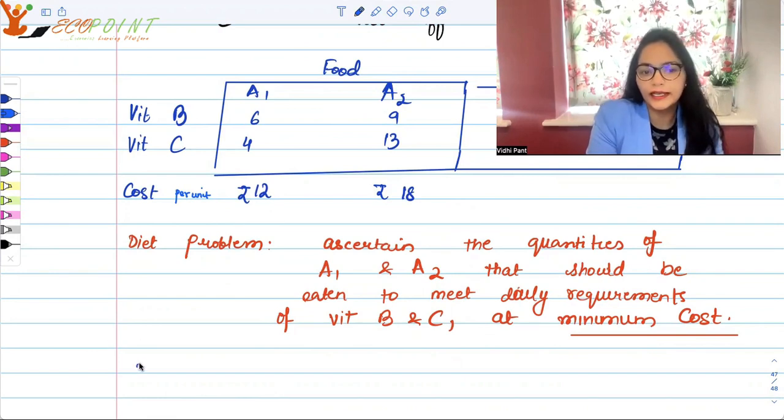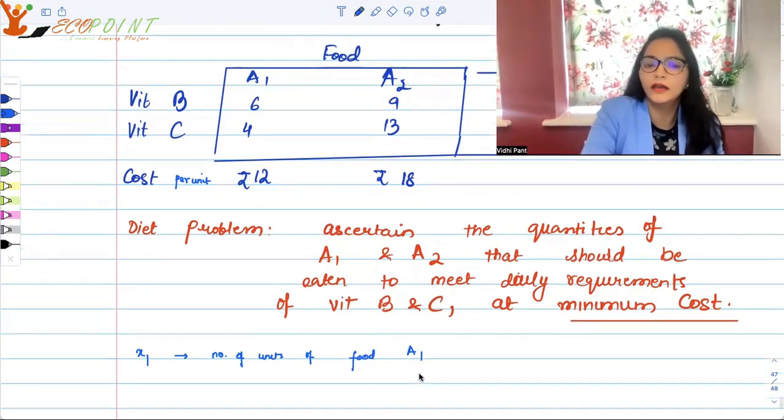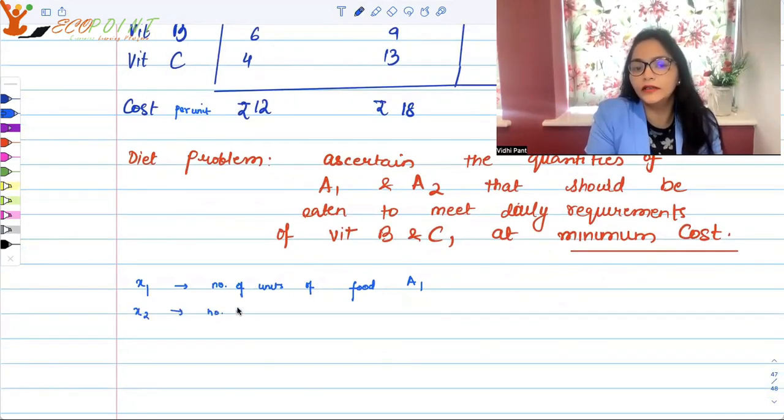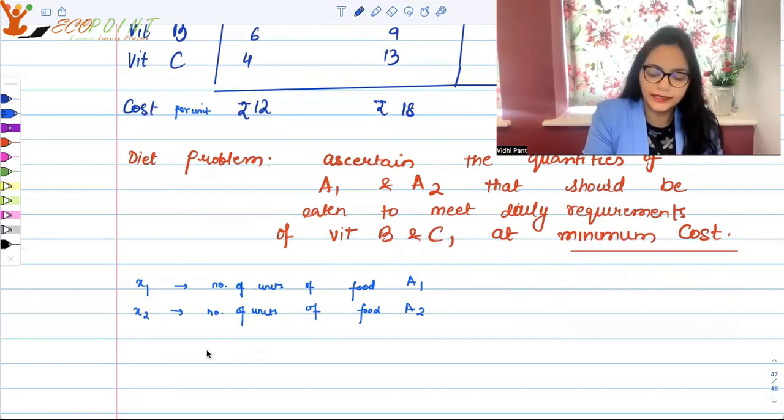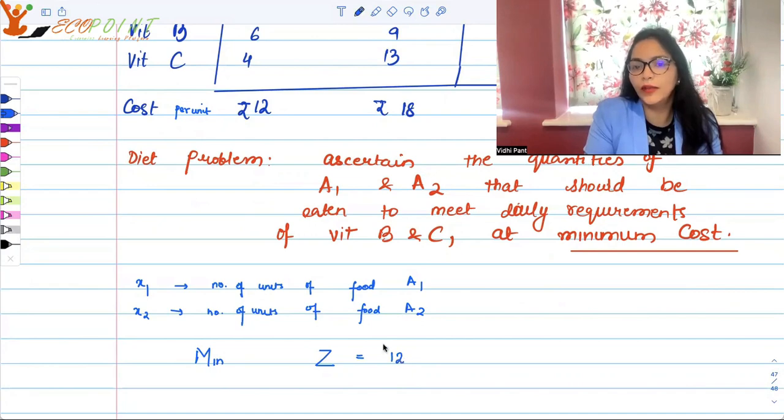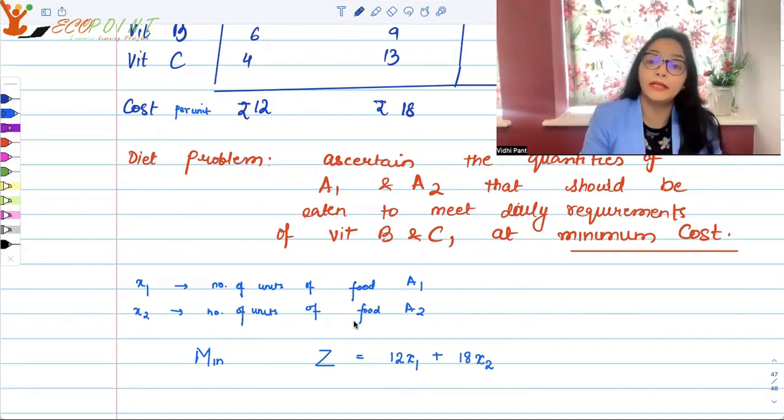The formulation of this would be: I want to know what is the amount of A1, A2 at minimum cost so that my daily requirements are met of vitamin B and C. In that scenario, suppose x1 is the number of units of food item A1 and x2 is the number of units of food item A2. That means our whole idea about the cost is to minimize the cost. I would want to minimize, say, Z which is 12 rupees per unit.